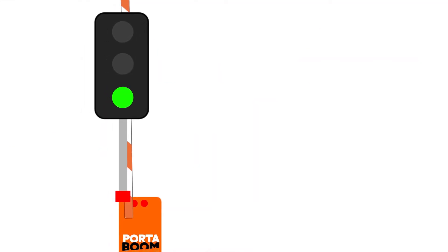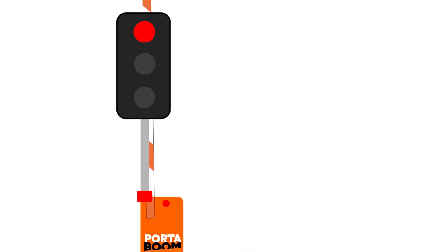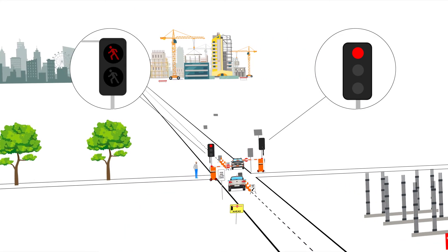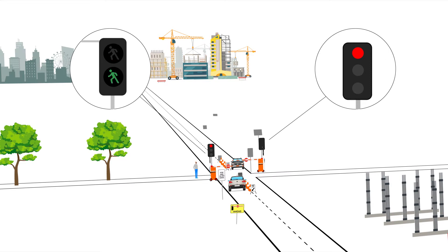the traffic lights will activate, changing the light to amber and red. The Portaboom arm then lowers to stop traffic. The pedestrian walk light then turns green for pedestrians to safely cross.